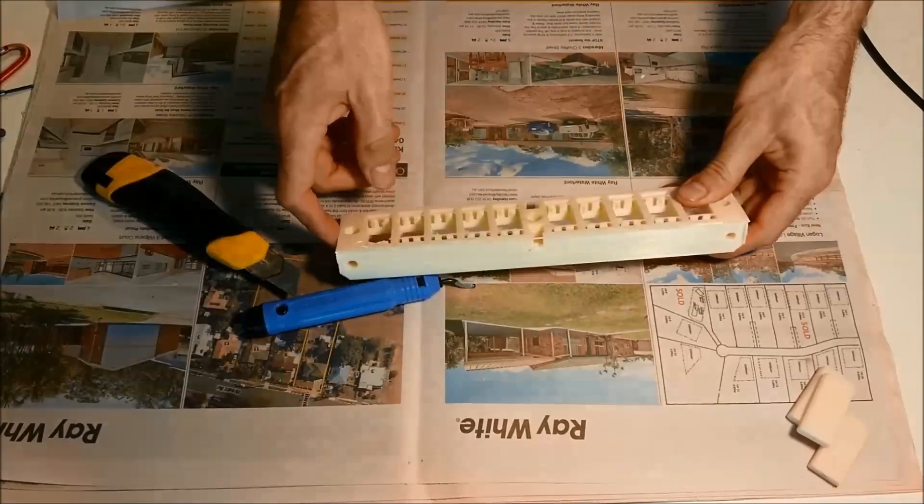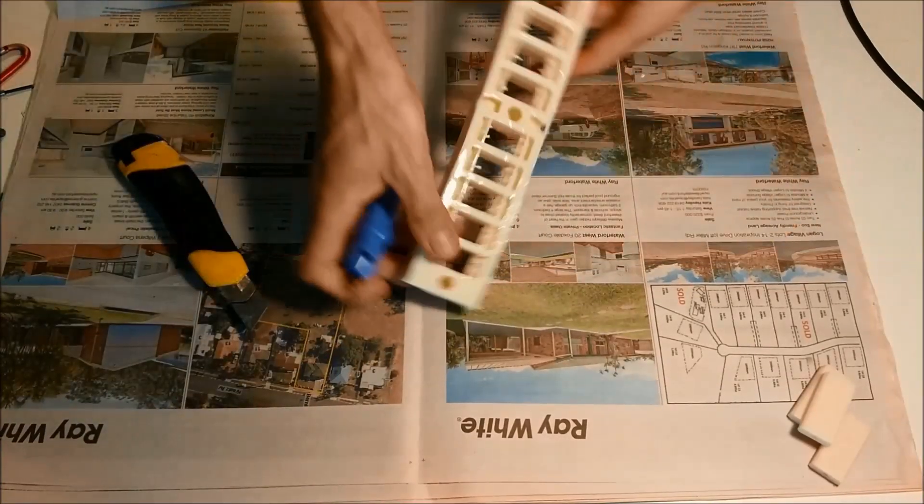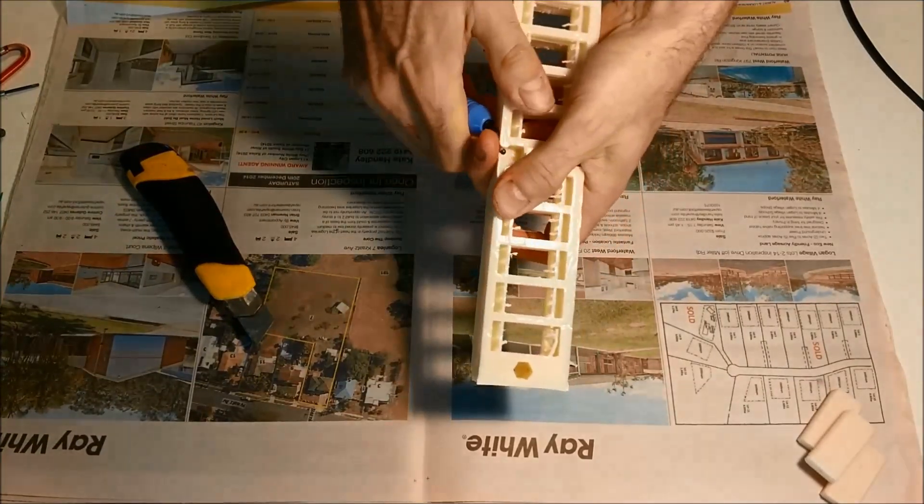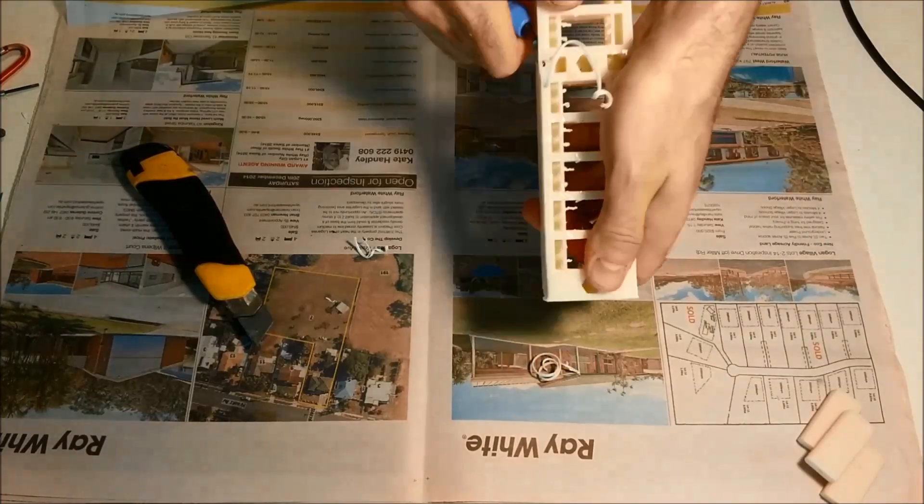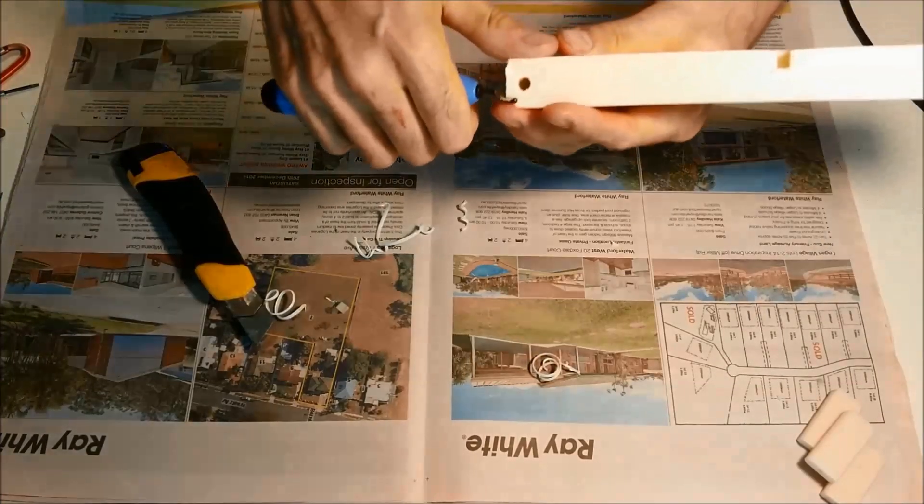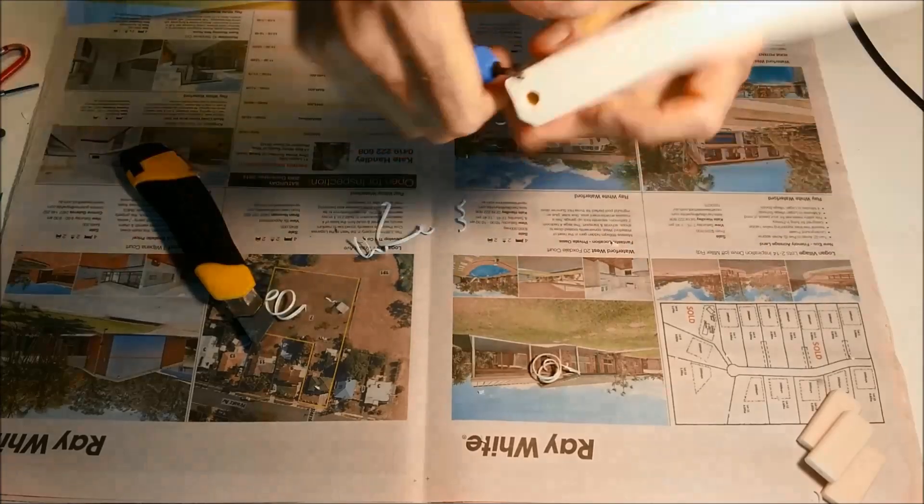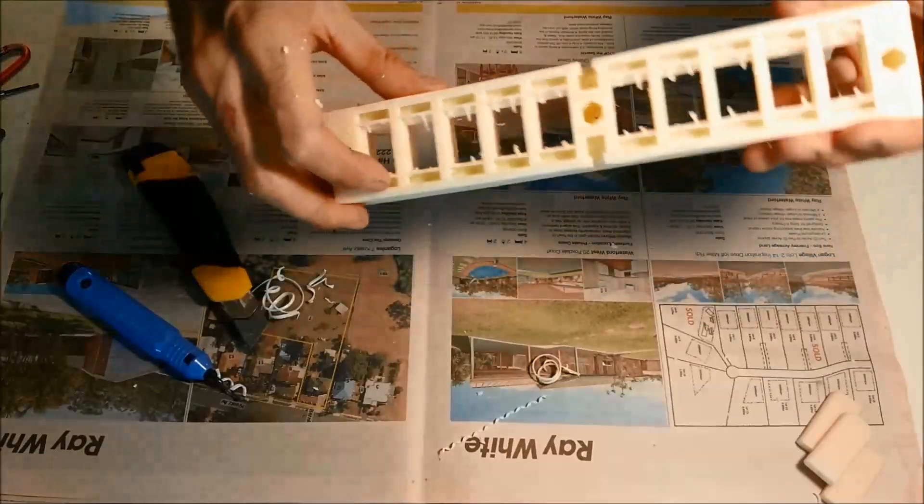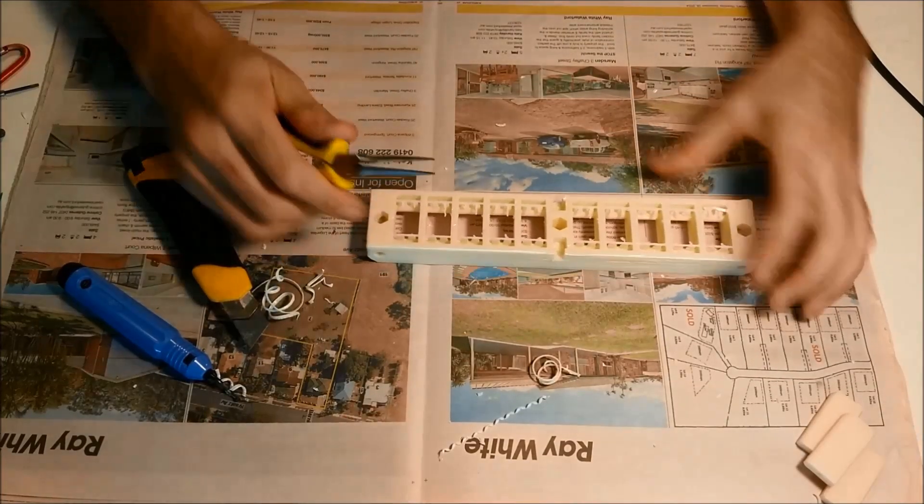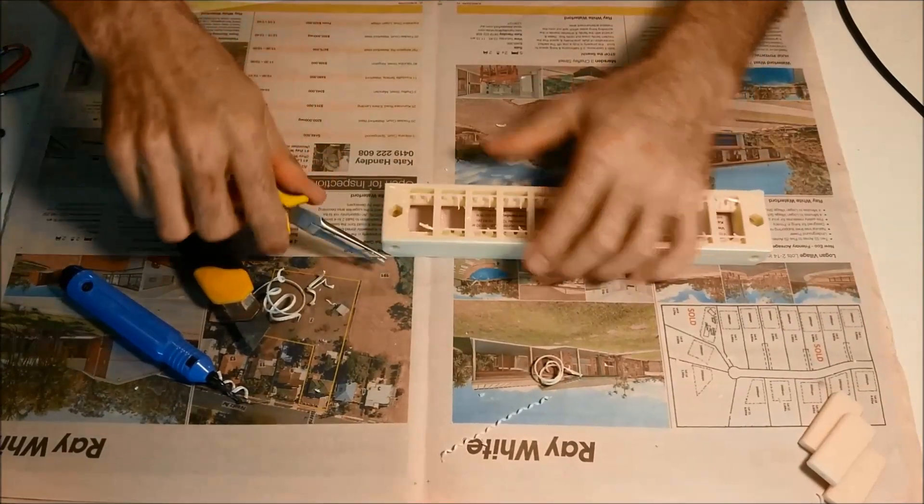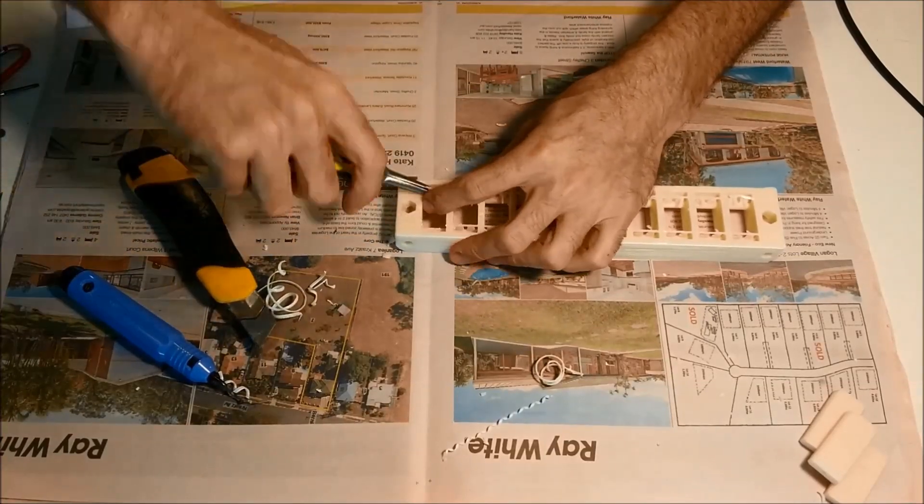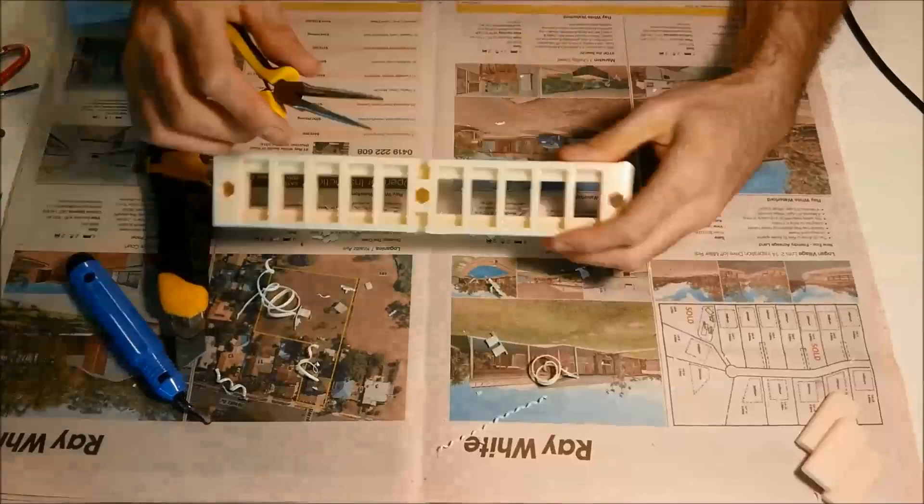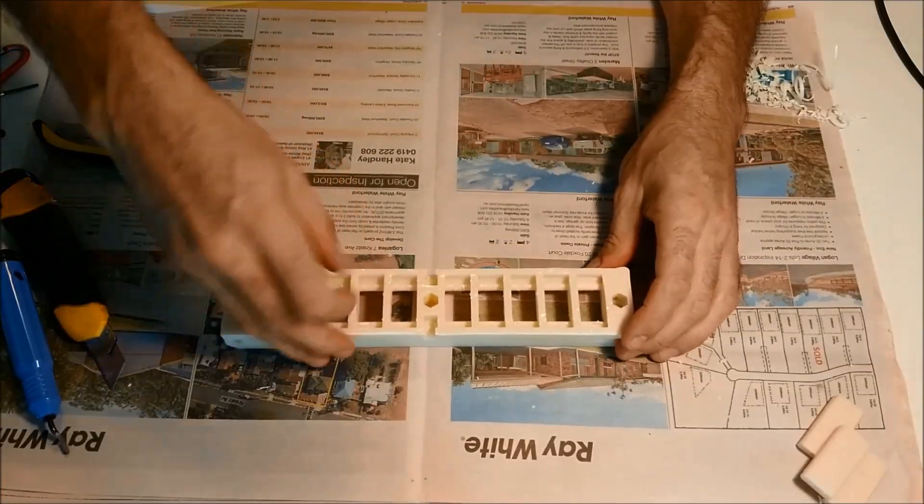Then we're going to clean up the brim with a deburring tool and also the edges. The next step is to remove these supports using some long nose pliers. So that's pretty much done, that's one of the modules cleaned up.